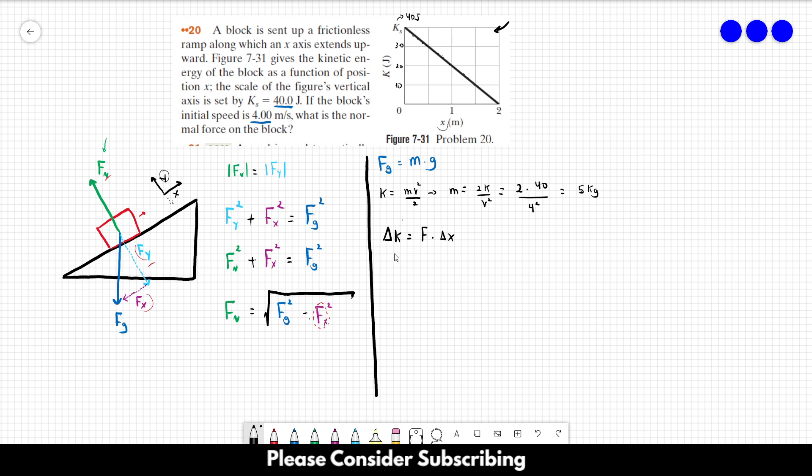And in this case, the only force that changes the kinetic energy is Fx. Because that's the only force that has a component in the direction of the movement. The normal force is perpendicular to the movement. So the change in kinetic energy due to the normal force is zero. So that's why that's only Fx here.